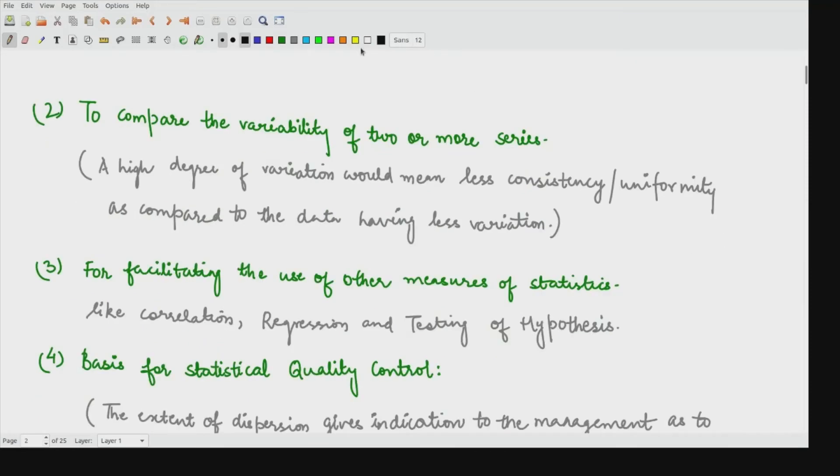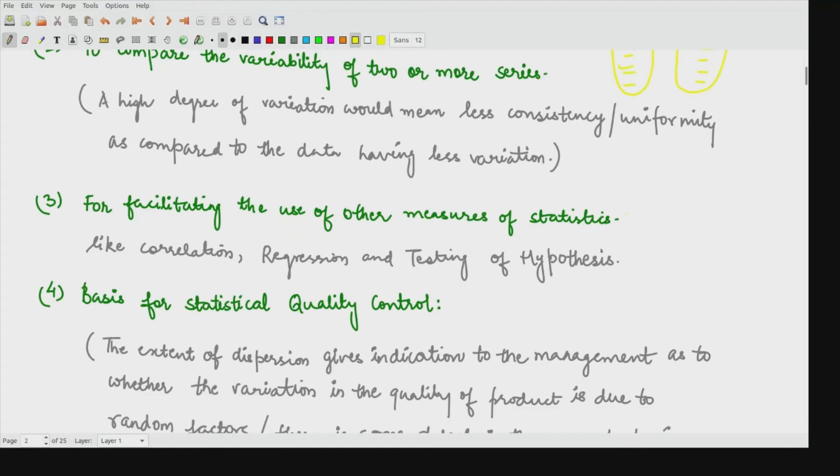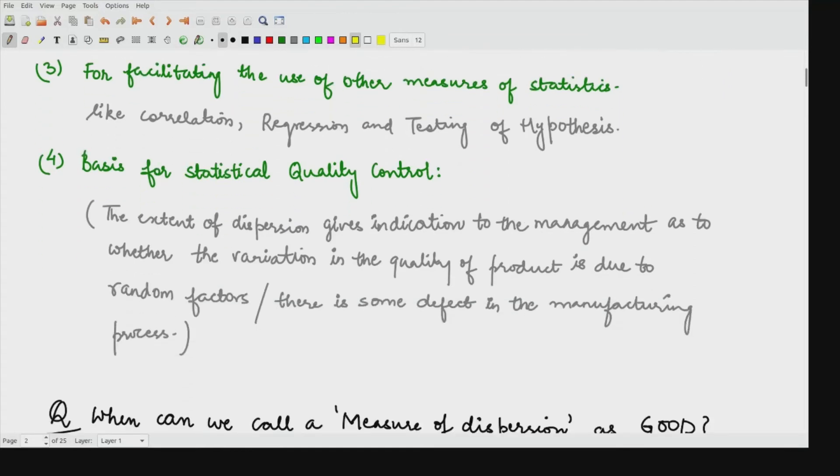Second objective that it covers is to compare the variability of two or more series. Suppose we have one data with us and we have another series having another kind of data with us. Now to compare these two series among themselves, that is also done using this dispersion. Whenever you have high degree of variation, that means the series are quite different from each other and could not be compared as such.